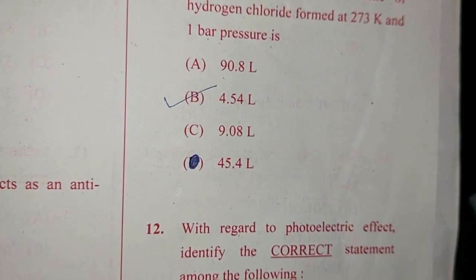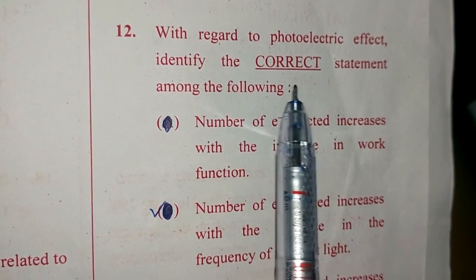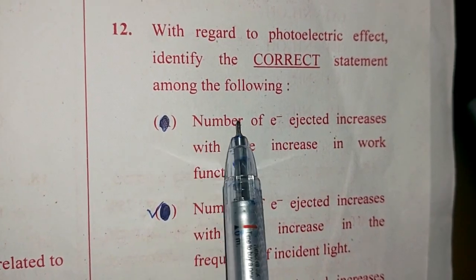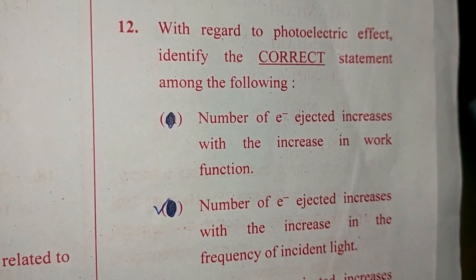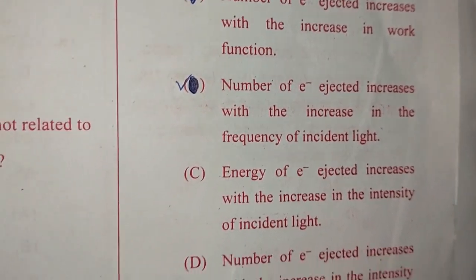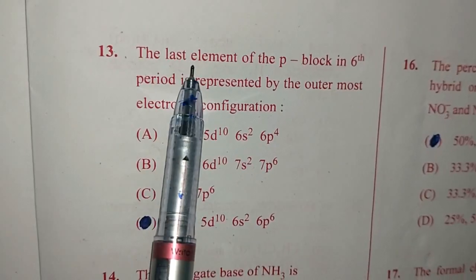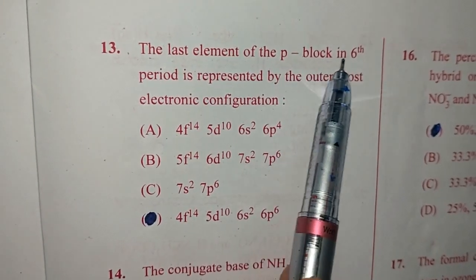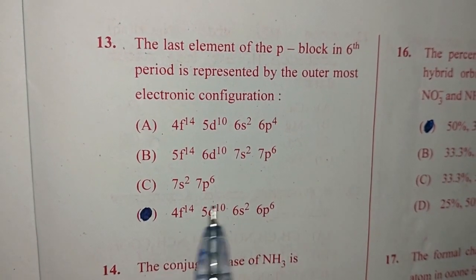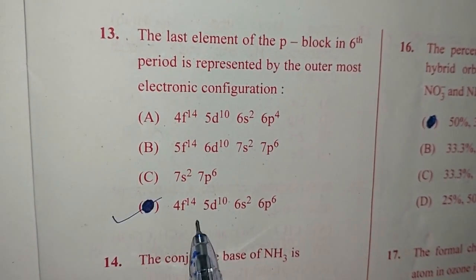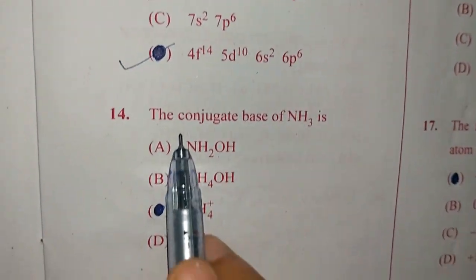Question 12. With regard to photoelectric effect, identify the correct statement among the following. And the answer is option D, which states that number of electrons ejected increases with the increase in the intensity of incidence. Question number 13. The last element of the P block in sixth period is represented by the outermost electronic configuration 4F14, 5D10, 6S2, 6P6. Answer is option D.